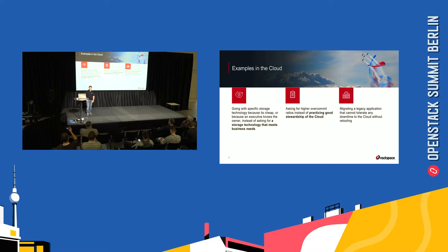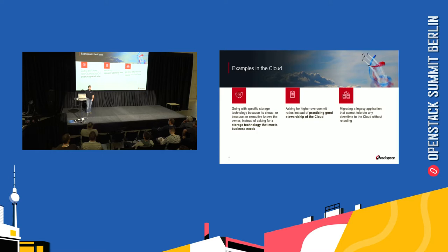Asking for higher over-commit ratios instead of practicing good stewardship of the cloud. We all know the cloud is not infinite, and especially when the business is responsible for all aspects of that cloud, from the hardware all the way up. So it's up to users and cloud admins to practice good stewardship — deleting resources that aren't needed anymore. Increasing over-commit ratios may sound like a good idea at the time; however, this could result in deadlock processes and out-of-memory situations where the hypervisor's out-of-memory killer will end up mercilessly destroying VMs to try to save itself.